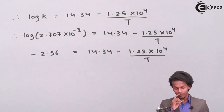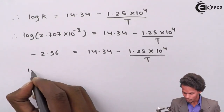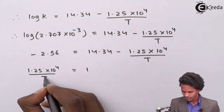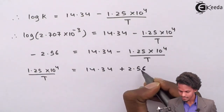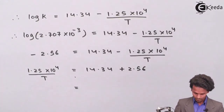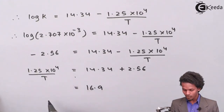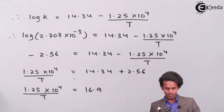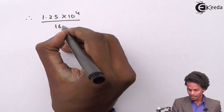Rearranging the equation: 1.25 × 10⁴ / T = 14.34 + 2.56, which equals 16.9. Therefore T = 1.25 × 10⁴ divided by 16.9.